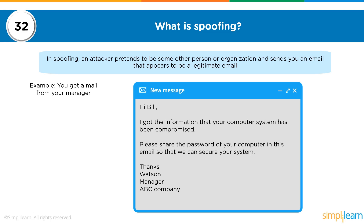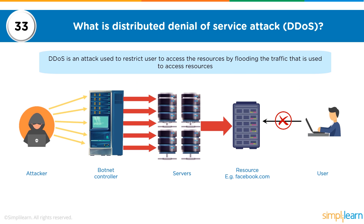What is a Distributed Denial of Service (DDoS) attack? A denial of service attack prevents legitimate users from accessing resources they are entitled to. For example, in a bandwidth-based attack, the attacker consumes the network's bandwidth so no bandwidth remains for legitimate users. Since a single device cannot generate enough traffic to bring down a large server, the attacker constructs a botnet and uses it to launch a distributed denial of service attack.